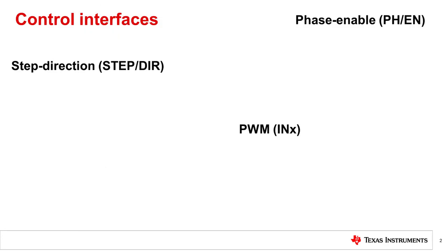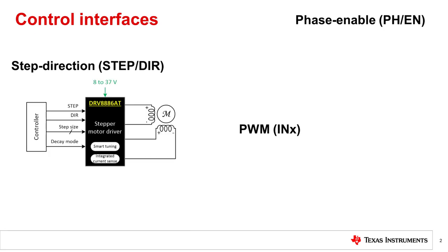Integrated stepper drivers come with a variety of control interface options. This slide shows the three main ones: step direction, phase enable, and PWM. A step direction interface uses rising edges of pulses on the step control pin to move the motor. When the driver receives a rising edge on the step pin, it moves the motor to the next full step or microstep position. A series of step pulses will spin the motor continuously. The direction pin, or DIR pin, chooses the direction the motor will turn.